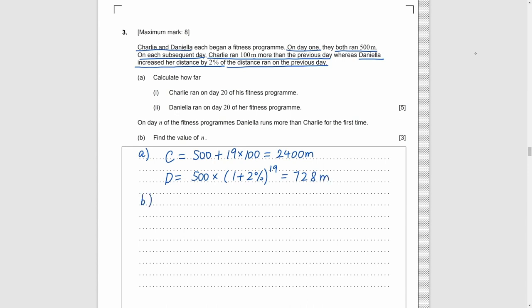Part B. On day N, D runs more than C for the first time, and we need to find N. As D runs more than C, we set the general formula of D is greater than C. Then we just need to graph two expressions in the calculator, or just by the function of the calculator, we can get N is greater than 184 something. So N is equal to 185.